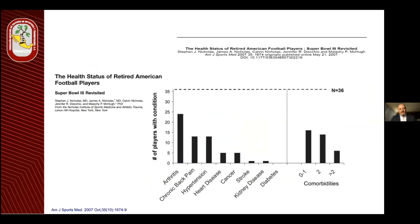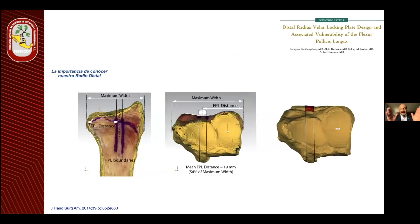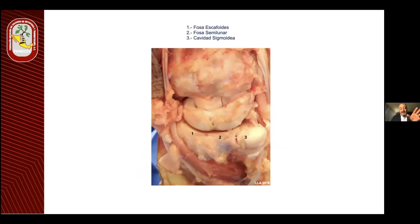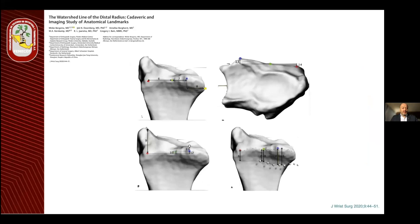No olvidar que una fractura también se acompaña de otros problemas como un proceso artrósico, dolores de espalda. Por eso es importante conocer el radio distal: su conformación, esas distancias, las fosas que tiene, la forma en pentágono que cambia un poco la forma de tratar, porque no es un hueso plano para nada. Y esa relación que guarda con el radio-cúbito, el radio-carpal, la primera fila, y esa angulación volar apoyada sobre todo en la fosa del semilunar y la fosa del escafoides.